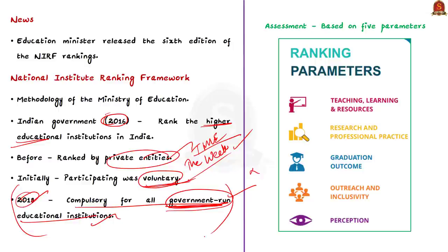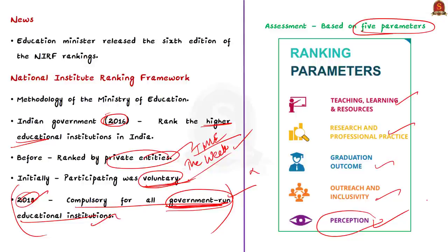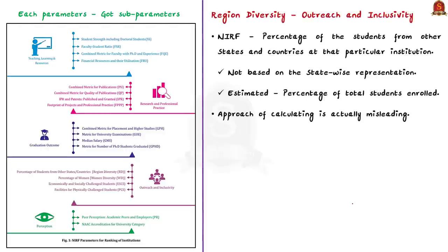All education institutions under NIRF are assessed on five parameters: Teaching, Learning and Resources; Research and Professional Practices; Graduation Outcome; Outreach and Inclusivity; and Perception. Each of these parameters has up to five sub-parameters. In this discussion, we'll analyze the criteria of regional diversity, which is a sub-parameter under Outreach and Inclusivity.